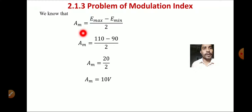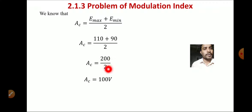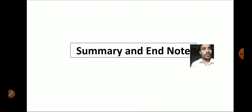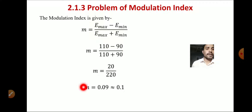Solution: A_m = (E_max − E_min) / 2 = (110 − 90) / 2 = 20 / 2 = 10 volts. So the amplitude of the message signal is 10 volts. A_c = (E_max + E_min) / 2 = (110 + 90) / 2 = 200 / 2 = 100 volts. Modulation index m = (E_max − E_min) / (E_max + E_min) = (110 − 90) / (110 + 90) = 20 / 200 = 0.1.